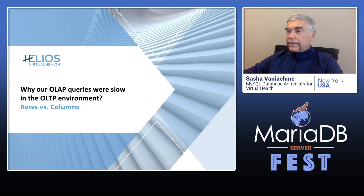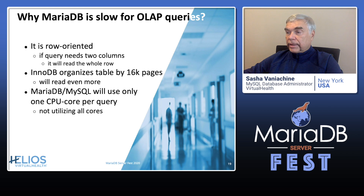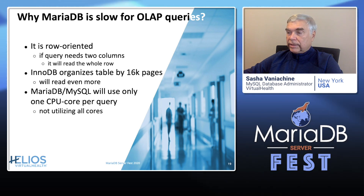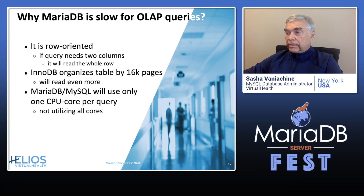Let me summarize why our analytical queries were slow in the transactional environment. Most relational databases, such as MariaDB, are row-oriented. If a query needs two columns, it will read the whole row. InnoDB organizes tables by pages, resulting in even more data to be read. And last but not least, MariaDB will use only one CPU core per query.